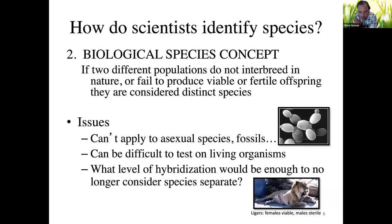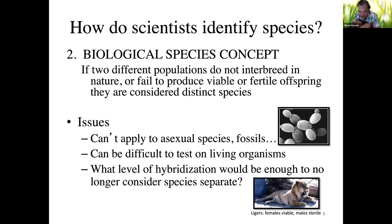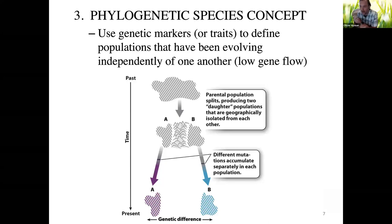You also have to ask what level of hybridization would be enough to no longer consider species separate. Even if two species can interbreed, like ligers — crossing a tiger with a lion — female ligers are viable and can reproduce, but male ligers are sterile. Does this mean they are two different species, or does producing some viable offspring mean they shouldn't be considered separate species? These are gray areas with the biological species concept.